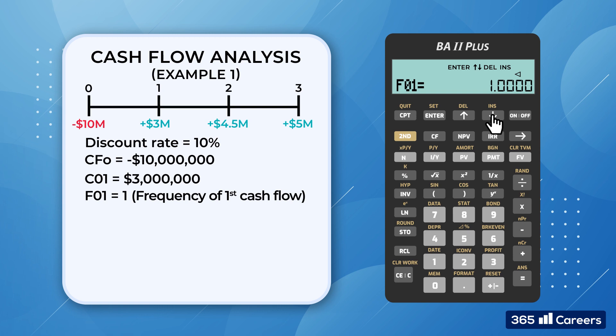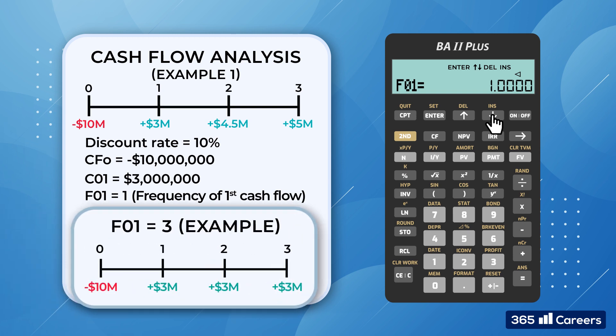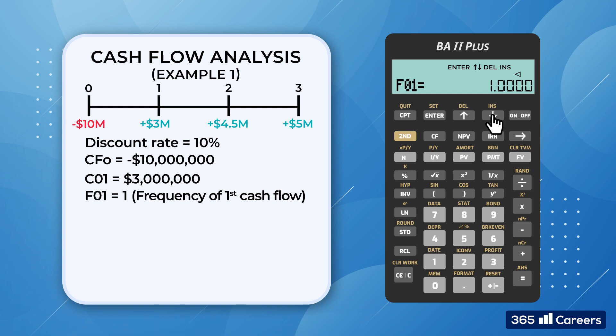If the project generates equal cash flows of $3 million per year for the next three years, we would be able to assign F01 as 3. But that's not the case here, so we move on by scrolling down.